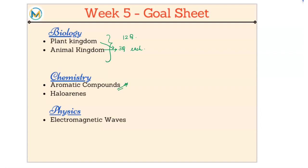One question can come from this section. We had done halo alkanes, now we have to do halo arenes. Again, one question from this section can be expected. Electromagnetic waves, small chapter, two questions can be expected from this particular section. So you see it's an easy peasy week, you can easily achieve this particular week goal.